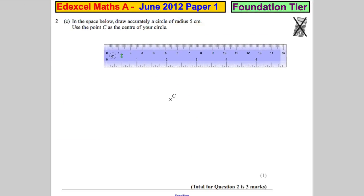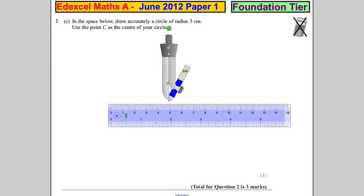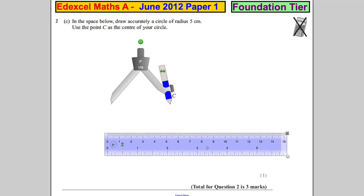Right, and then you need to get out your compass and what you need to do is you need to measure five centimeters because that's going to be the radius of your circle. So there we go, put that away now.